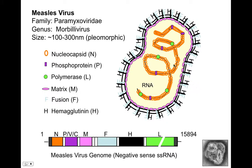The nucleocapsid holds the genome so that when it gets into the cell, the innate immune system won't sense it and start to react. Phosphoprotein is also on the genome — it's not as ever-present or ubiquitous as the nucleocapsid. Polymerase is attached to it, and during replication it will start to replicate. Matrix protein lines the inner envelope and appears to be important for spread.